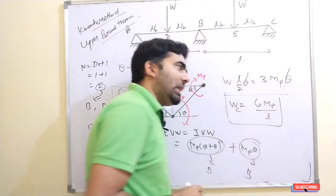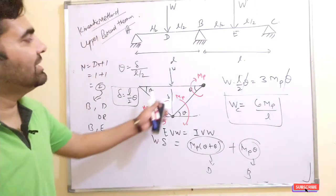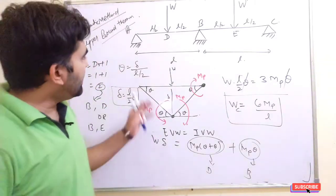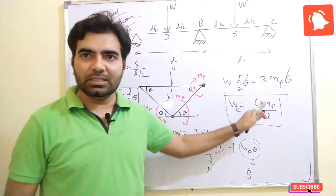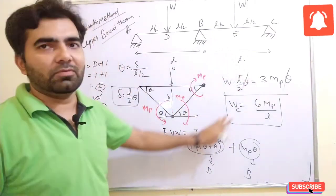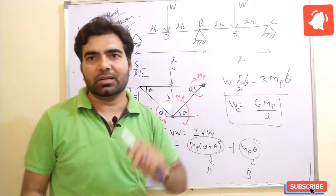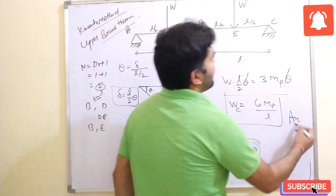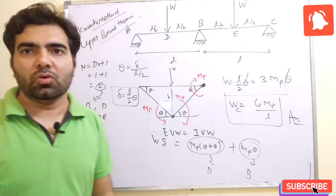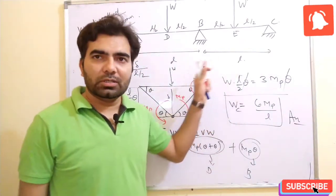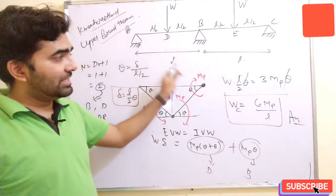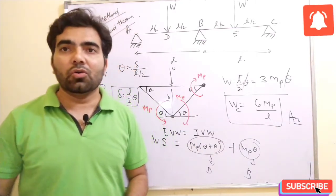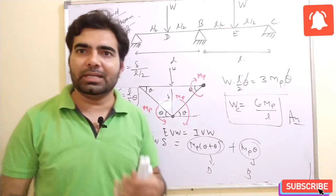This is the collapse load obtained using the kinematic method. For span BC, the same procedure applies and the same result will come. Since the structure is symmetric, the collapse load for this structure is 6MP by L. Hopefully you understood both the static method and the kinematic method.